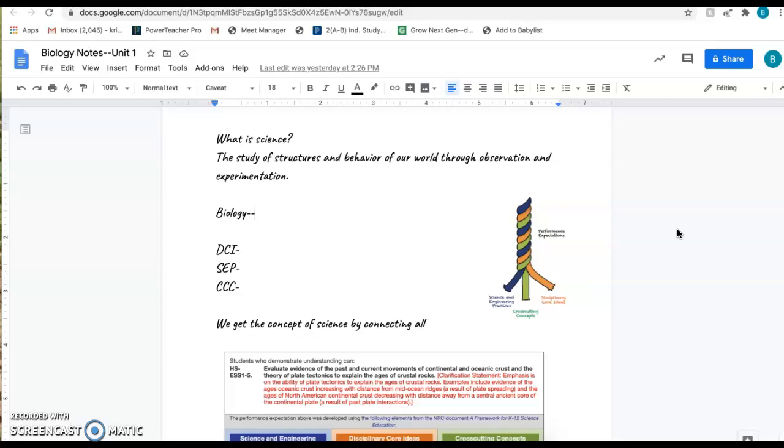Science really is a study of structures and behavior of our world through observation and experimentation. Scientists observe lots of different things and experiment with them together to figure out how the world works and how different things behave together, whether that's animals, atoms, neutrons, protons, chemicals, or chemistry. Biology is mainly about how life, animals, plants, and all those things interact with each other.